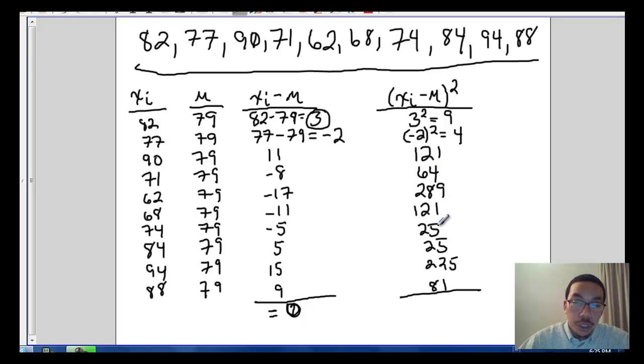So the squared deviations about the mean: 9, 4, 121, 64, 289, 121, 25, 25, 225, and 81, we come up with a total of 964. So you can pop those into your calculator or do them by hand and you should come up with a total of 964.